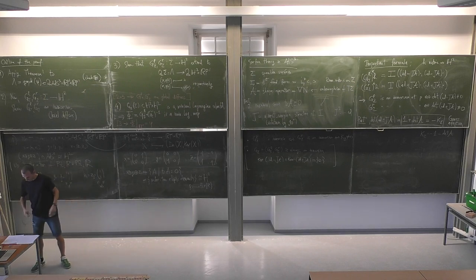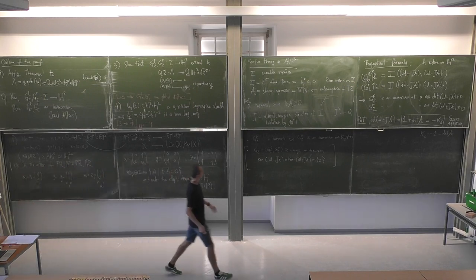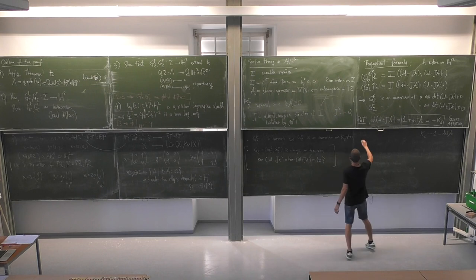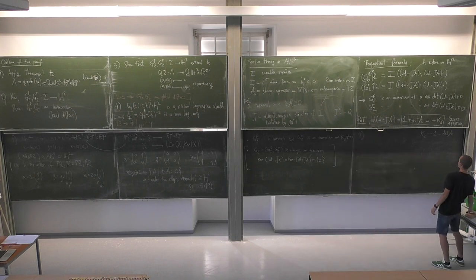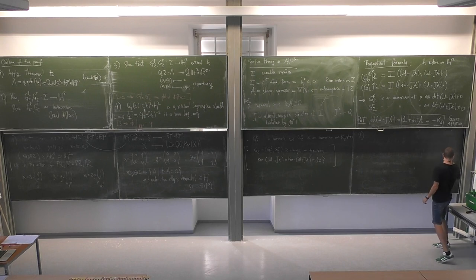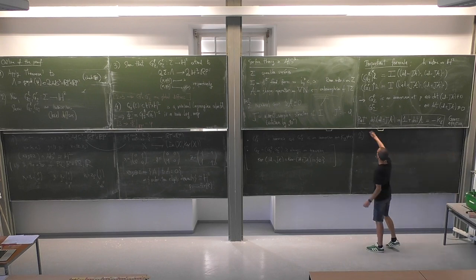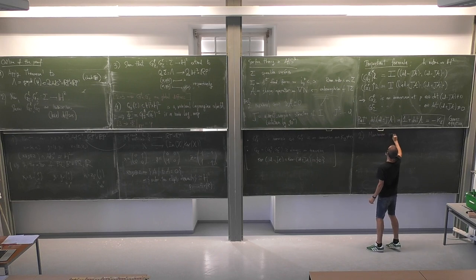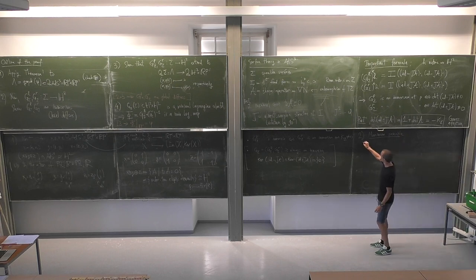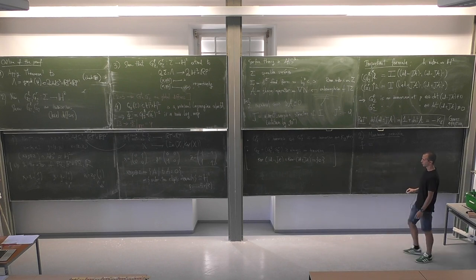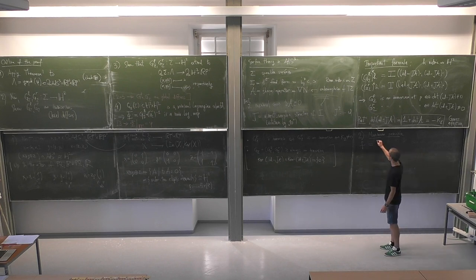Incidentally, this shows that the total Gauss map — the composition of the two — is always an immersion. If a vector fails to be in the image of the differential for one map, it must be in the kernel of both (Id − JA) and (Id + JA), but their intersection is only the zero vector. So the total Gauss map is always an immersion, though each individual one requires the condition that the curvature doesn't vanish.